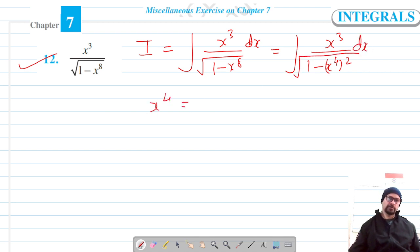When differentiated with respect to t gives 4x cubed dx equals dt. In this case, x cubed dx should be equal to dt by 4.